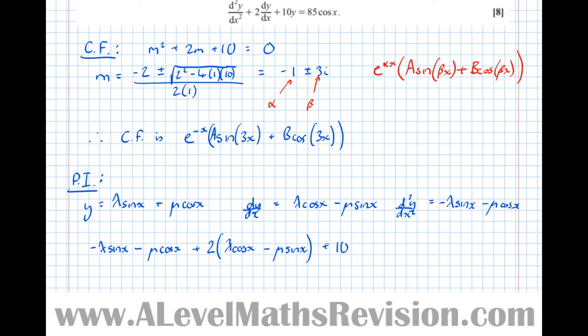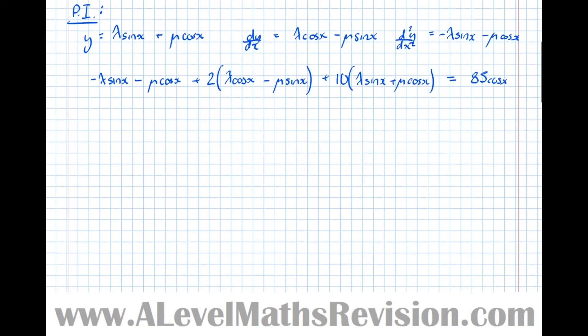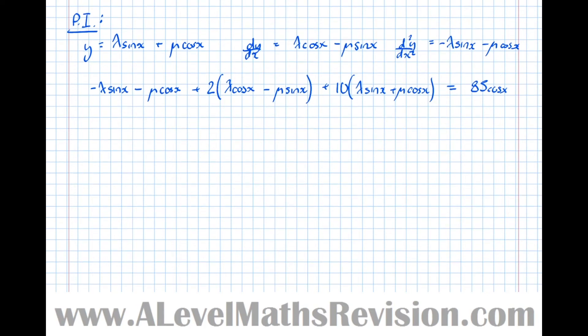Then plus 10y, so plus 10 lots of lambda sine x plus mu cos x. And we know that the right-hand side is equal to 85 cos x. So let's now try and multiply that out and find out what lambda and mu are by comparing coefficients. So the next line we've got, minus lambda sine x minus mu cos x. And multiplying these brackets out, we get plus 2 lambda cos x minus 2 mu sine x plus 10 lambda sine x plus 10 mu cos x equals 85 cos x.